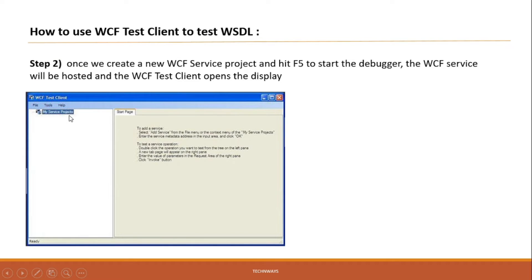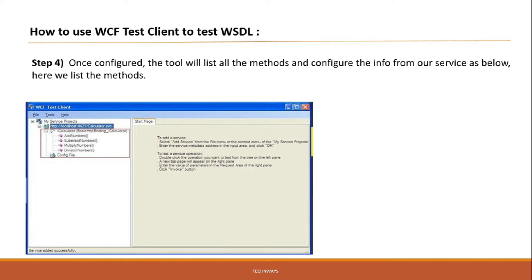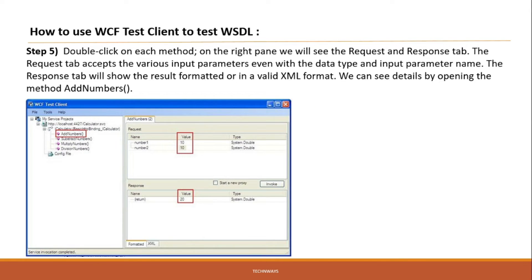The steps for using this application: once you install a WCF service you will see this UI. Click 'Add Service', put the service URL in the text box, and click OK. Whatever operation contracts are declared in that service — like Add Number, Subtract Number, Multiply, Divide — will get loaded here. Click on any method, for example Add Number, and whatever input parameters it requires will be prompted.